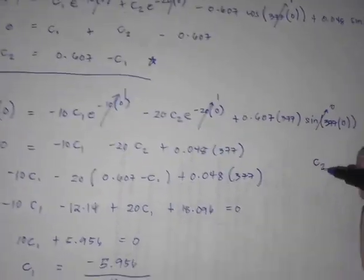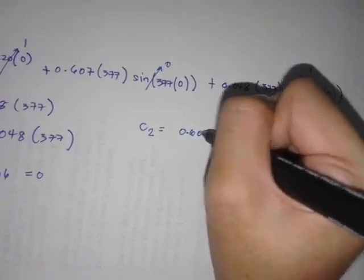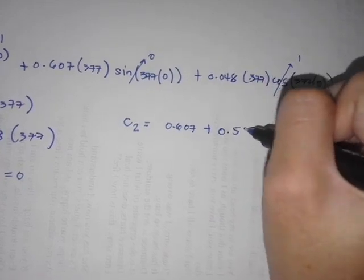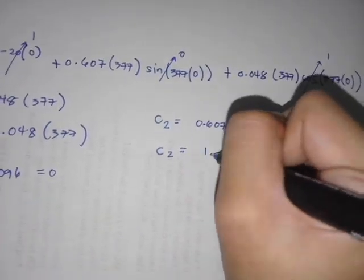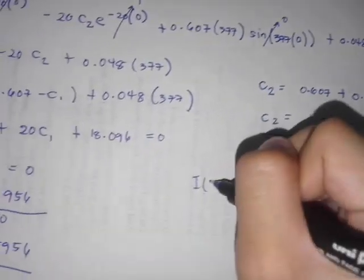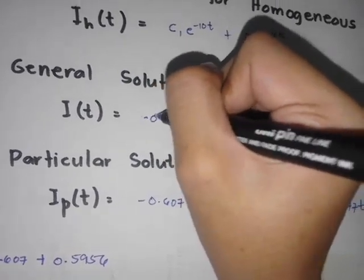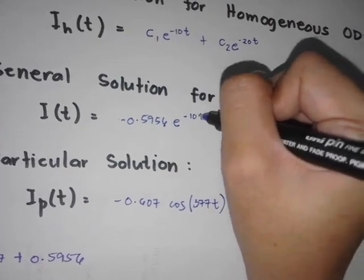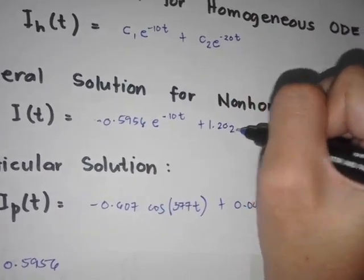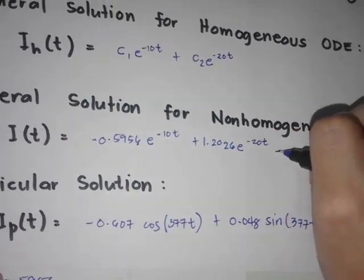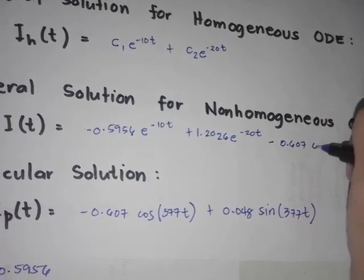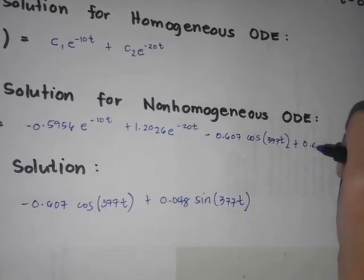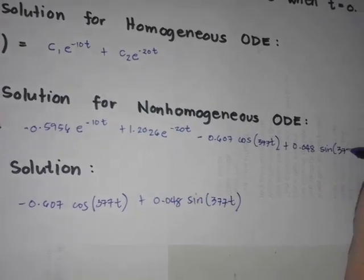We can now find C2. C2 = 0.607 minus C1 = 0.607 minus (negative 0.5956), so C2 = 1.2026. Therefore, the final answer is: I(T) = negative 0.5956 e^(negative 10T) plus 1.2026 e^(negative 20T) minus 0.607 cosine(377T) plus 0.048 sine(377T).